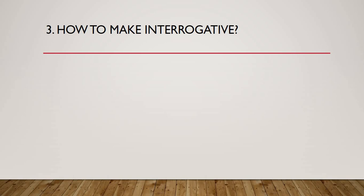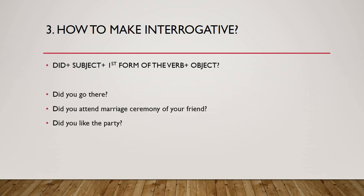Number three: how to make interrogative. Interrogative kaise banate hain past simple ka? Formula: did plus subject plus first form of the verb plus object. Pehle did lagaenge, phir subject, phir first form of the verb, phir object. Yahan pe bhi notice kijiye ki first form aayegi — jab bhi did use karenge toh first form aayegi. Past simple mein second form of the verb sirf aur sirf positive sentence mein aata hai — baki interrogative aur negative mein first form of the verb aati hai aur uske saath did aa jaata hai. Did you go there? Did you attend the marriage ceremony of your friend? Did you like the party?